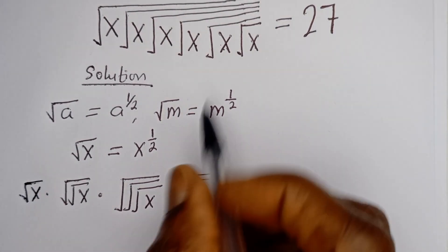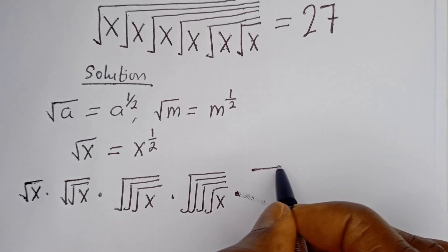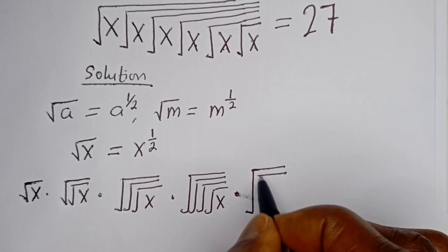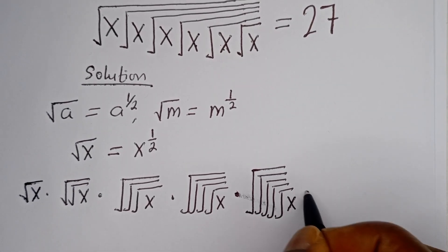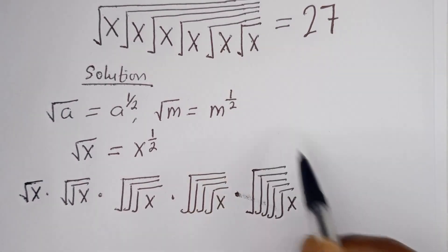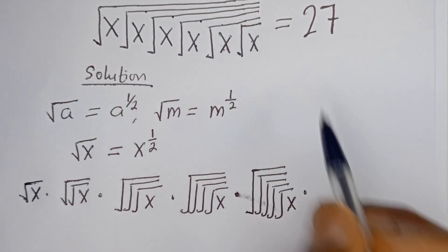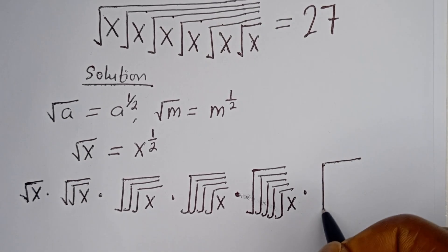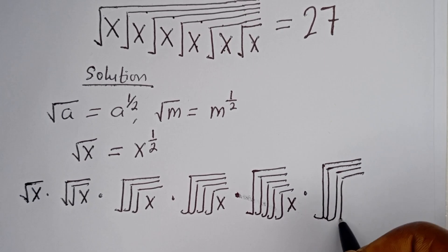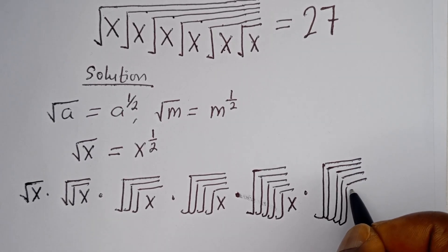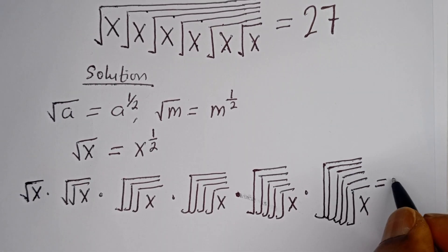The fifth s has five nested square roots, and the sixth s has six nested square roots of s. So altogether we have: one square root, two square roots, three square roots, four square roots, five square roots, six square roots of s — all multiplied together — is equal to 27.